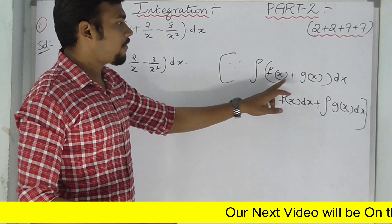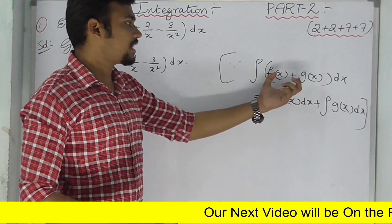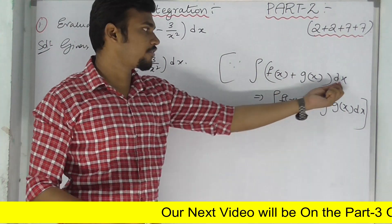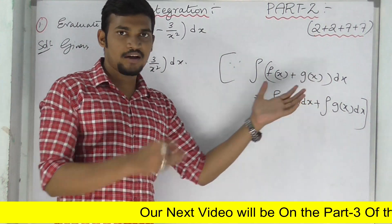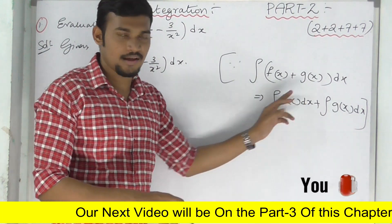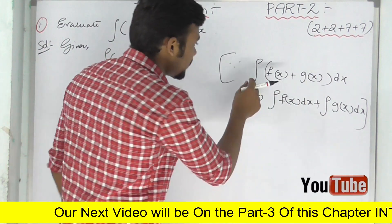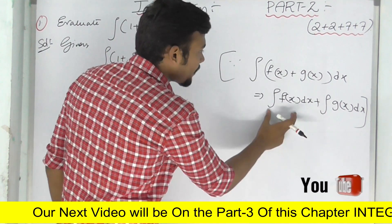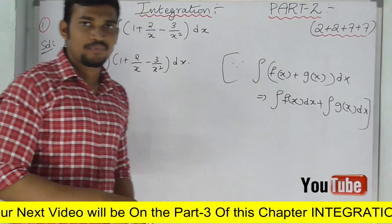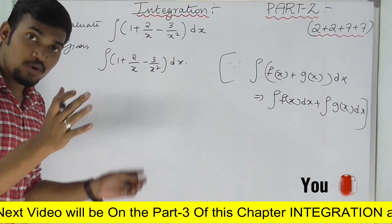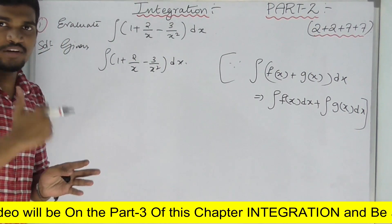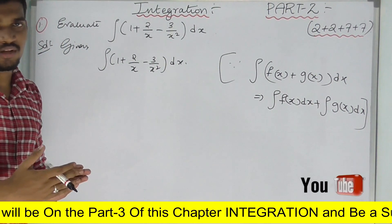The formula is: integral of [f(x) + g(x)] dx equals integral of f(x) dx plus integral of g(x) dx. Using this, we can separate and take the integrations individually.